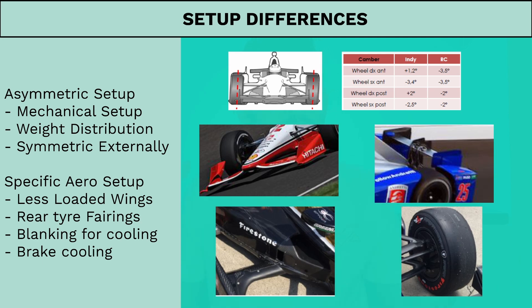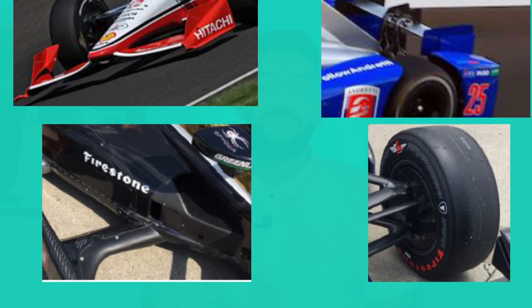IndyCars also use specific aero setups for ovals, such as less loaded wings. Wings are not the major downforce-producing elements on the car — they are there to balance the car. The major downforce element is the floor, because ground effect is more efficient in terms of downforce-to-drag ratio compared to wings, and wings create wakes which limit raceability. Additionally, there are rear tire fairings to address tire wakes and encourage closer racing. Cooling requirements are also minimalistic due to the high speeds providing sufficient mass flow rate to cool the engines and brakes, with small NACA ducts facilitating any additional cooling.